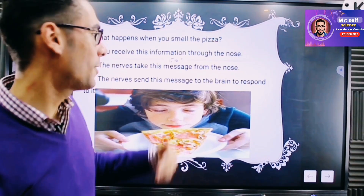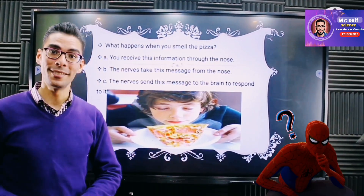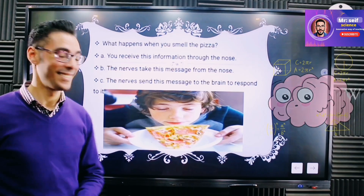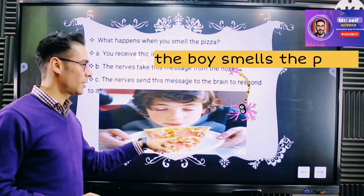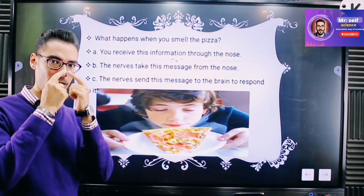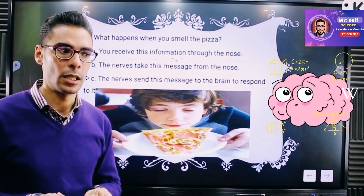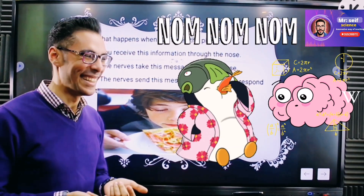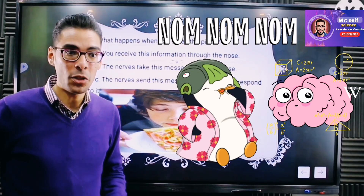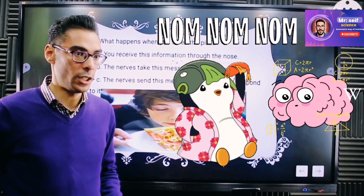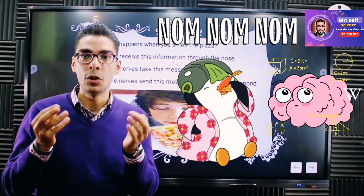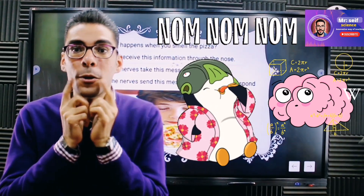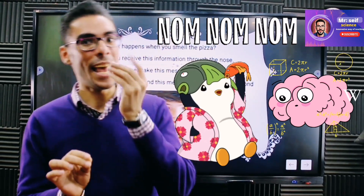Small assessment for you: what is going to happen in this situation, and how does your nervous system work? The boy will smell the pizza, so the nerves in the nose will deliver the message to the brain — it's delicious, it's tasty, and I'm hungry. I need to eat. But the brain cannot move or eat, so it has to give an order. The message is sent back from the brain to the nerves in the hand and mouth to take the slices of pizza and eat them.